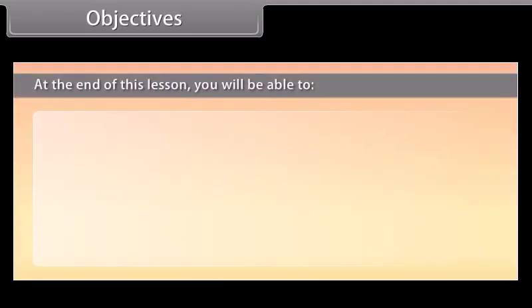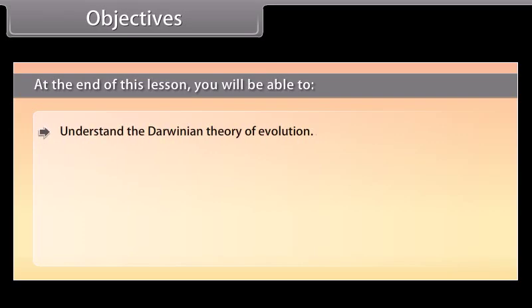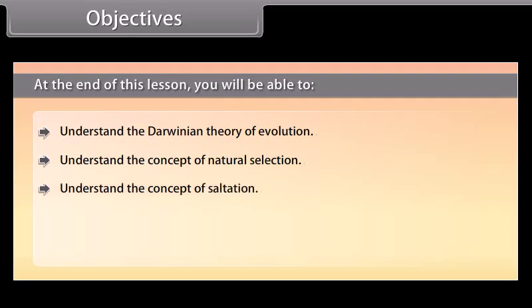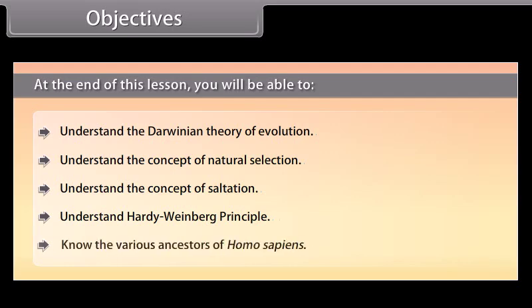At the end of this lesson, you will be able to: understand the Darwinian theory of evolution, understand the concept of natural selection, understand the concept of saltation, understand the Hardy-Weinberg principle, and know the various ancestors of Homo sapiens.